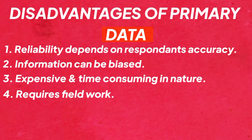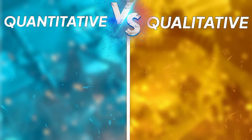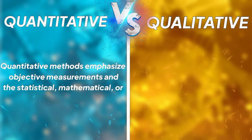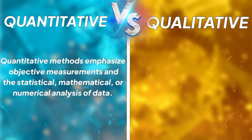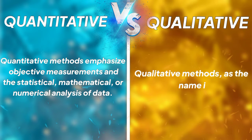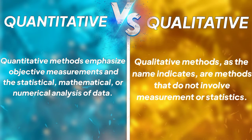There are two methods for collecting primary data: quantitative and qualitative. Quantitative means numbers — it is based on mathematical calculations using formats like close-ended questions, correlation and regression methods, mean, median, or mode. Qualitative does not involve mathematical calculations; it includes interviews, questionnaires, observations, case studies, etc. Qualitative data is mainly used in companies and the market.